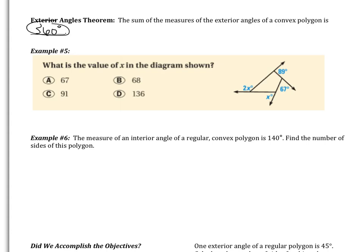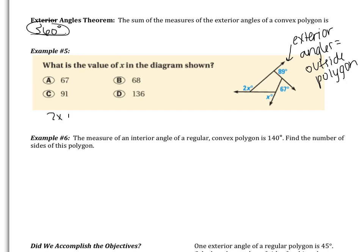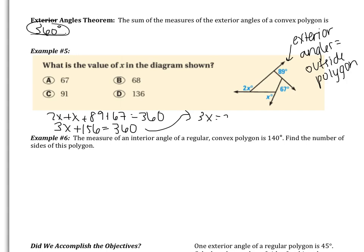Example 5: find the value of x in the diagram — all shown angles are exterior angles outside of the polygon. Since they sum to 360 degrees: 2x plus x plus 89 plus 67 equals 360. Simplifying: 3x plus 156 equals 360. Subtracting 156 gives 3x equals 204, and x equals 68. Exterior angles are a lot easier because the sum is always 360.